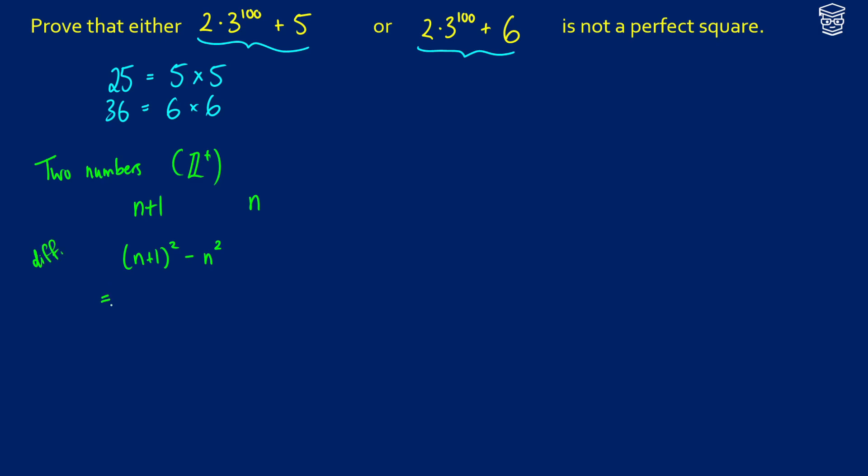If we do some calculations here, this is going to be the same thing as n squared plus 2n plus 1. We're subtracting n squared. This is the same thing as 2n plus 1. Now we need to be creative. What do we know that 2n plus 1 has to be greater than or equal to?